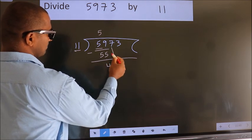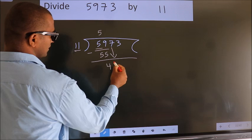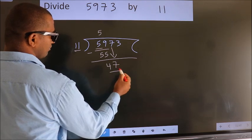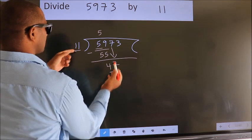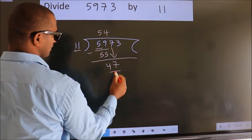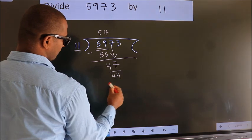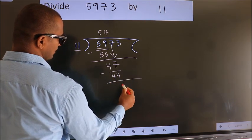After this, bring down the beside number. So, 7 down. So, 47. A number close to 47 in the 11 table is 11 fours, 44. Now we subtract. We get 3.